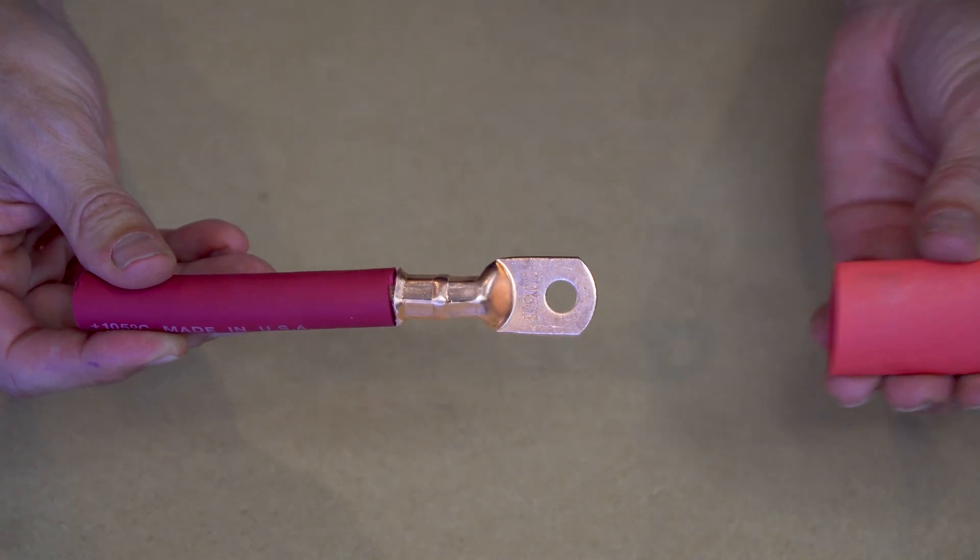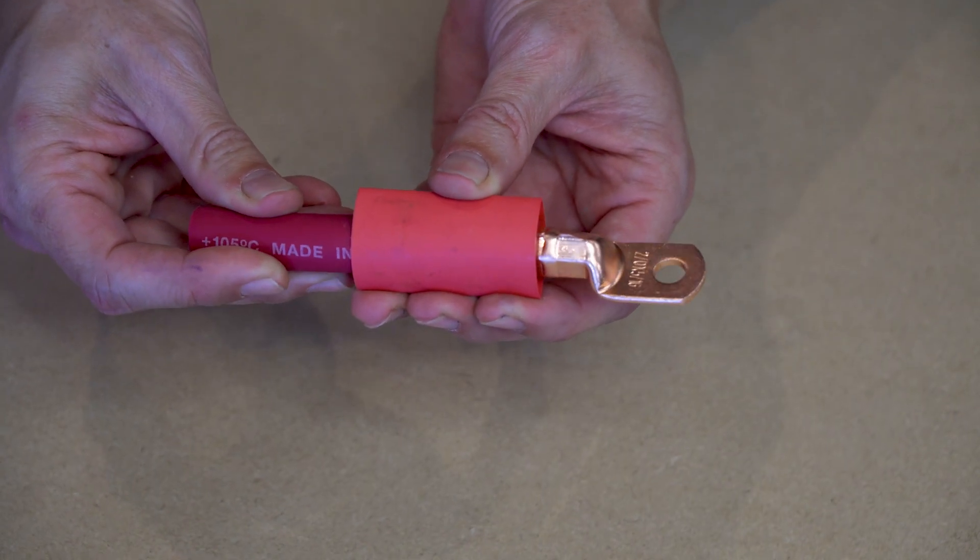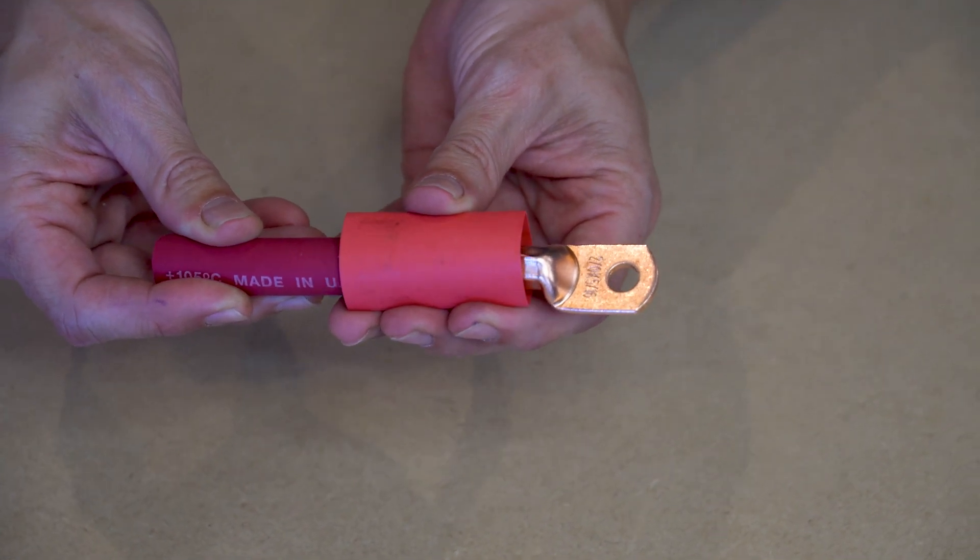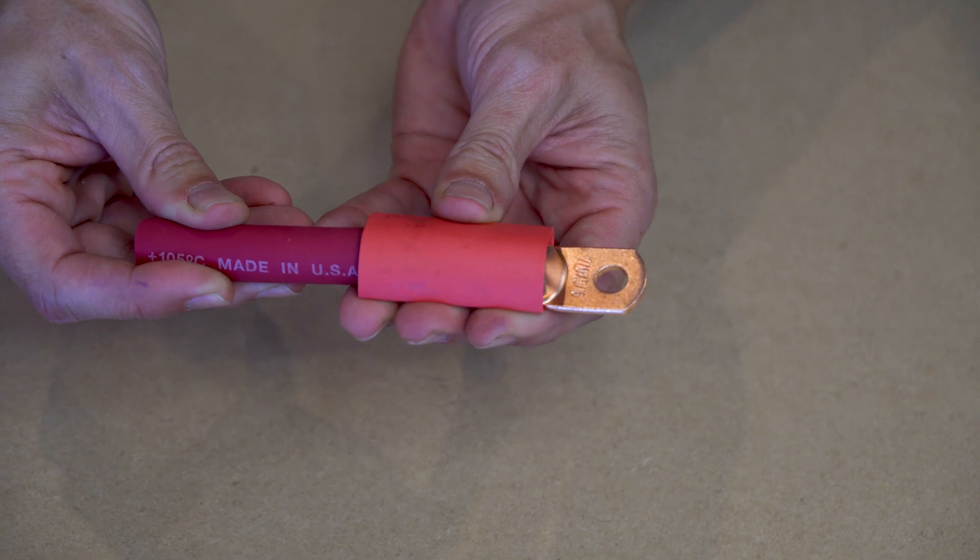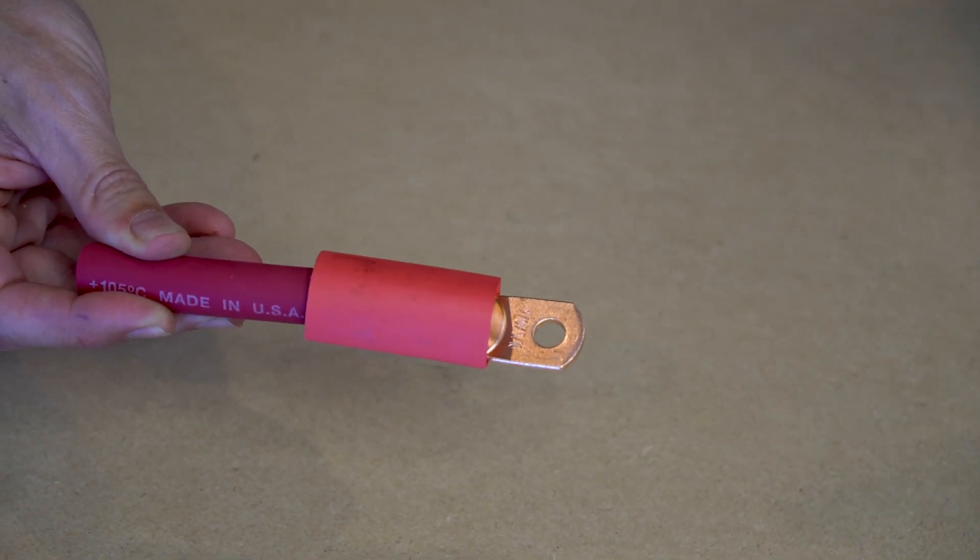Lastly, place the heat shrink sleeve over the lug. We like to place the heat shrink just so that it starts to cover the lug as the metal begins to rise. Then, activate the heat shrink with a heat gun.